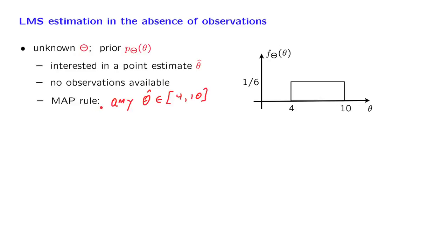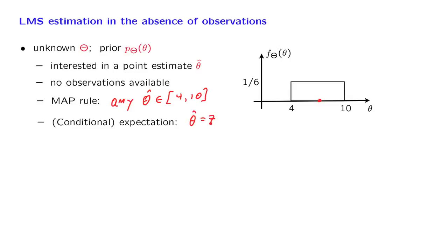How about a different estimator? We have seen the conditional expectation estimator. Once more, in our case, since we do not have any observations, the conditional expectation is the same as the expectation. And for this particular example, it would give us the midpoint of the distribution, namely an estimate equal to 7. Now, the MAP rule was inconclusive, while this rule gave us a number.